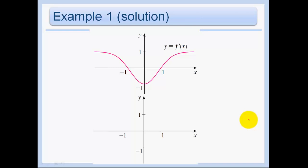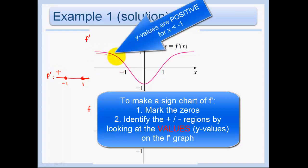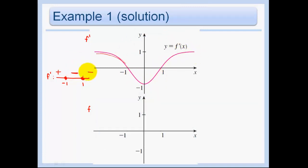Let's try and draw the function f. Remember, this is f prime. If we jot down a number line, we know that f prime is 0 at negative 1 and at 1. For values less than negative 1, the derivative was positive — y values were positive. Between negative 1 and 1, y values were negative. And for x values greater than 1, we have positive.